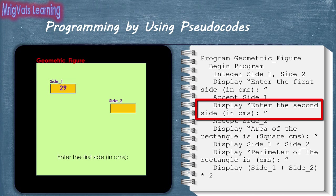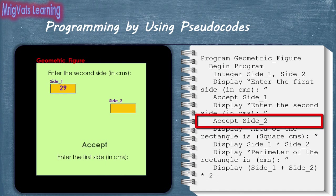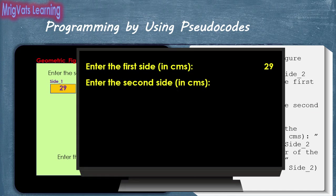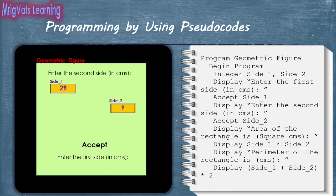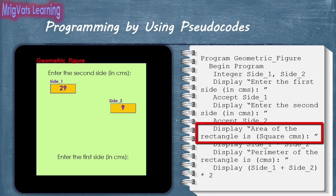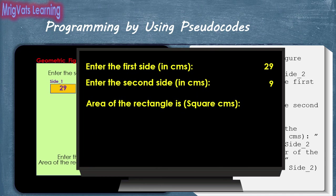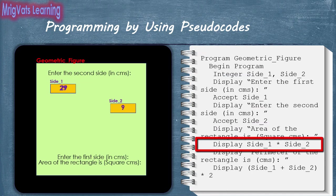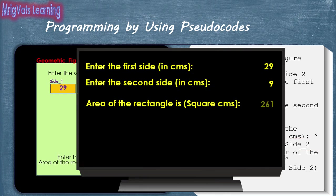With the next display statement, the program writes 'enter the second side in centimeters' text in memory, which the display statement takes as input and displays on the virtual display board. The next accept statement waits for the user to input the second number. As soon as the user enters a value, for example 9, the accept statement stores it in the Side2 variable. The program then writes 'area of the rectangle is square centimeters' text, and when the next display statement runs, it multiplies the values of the two sides and displays the result.